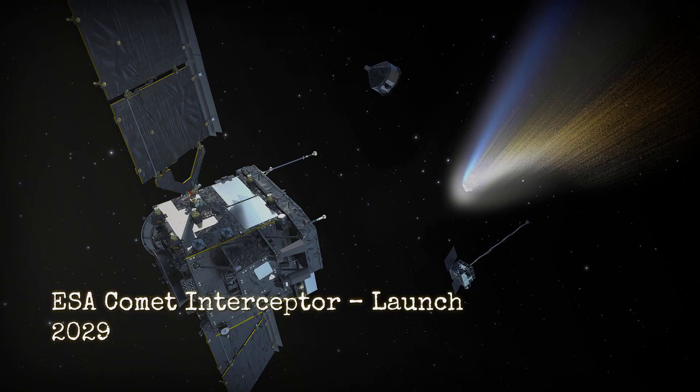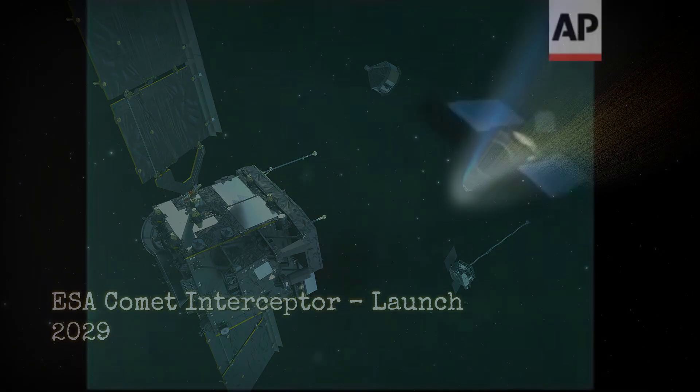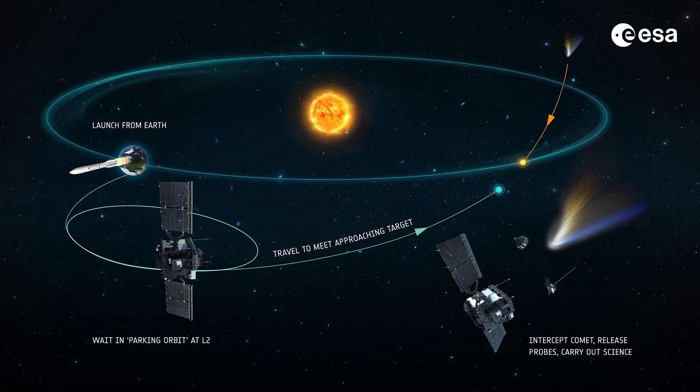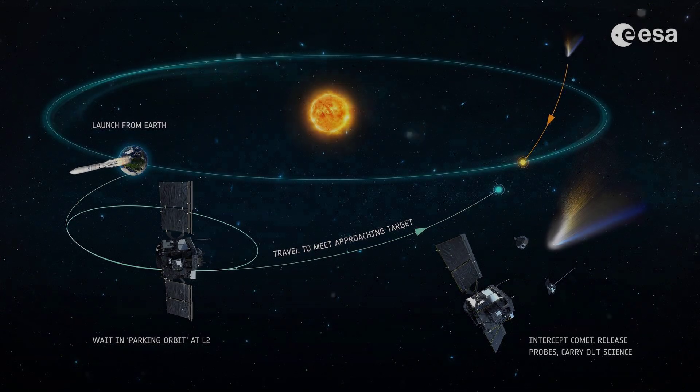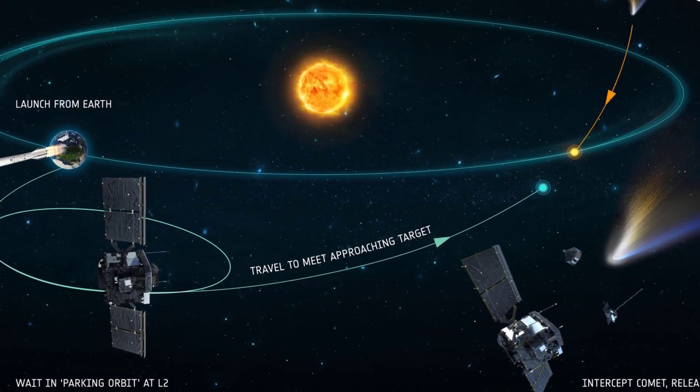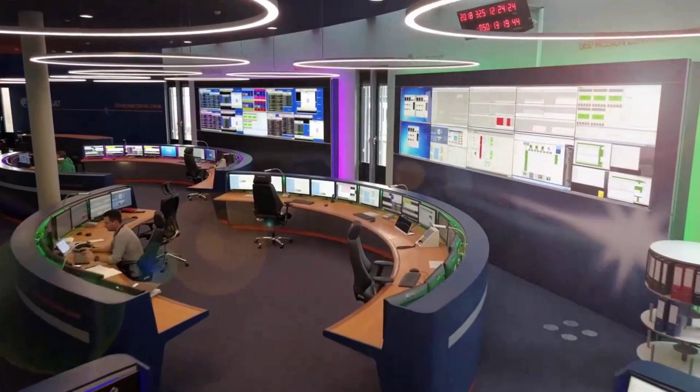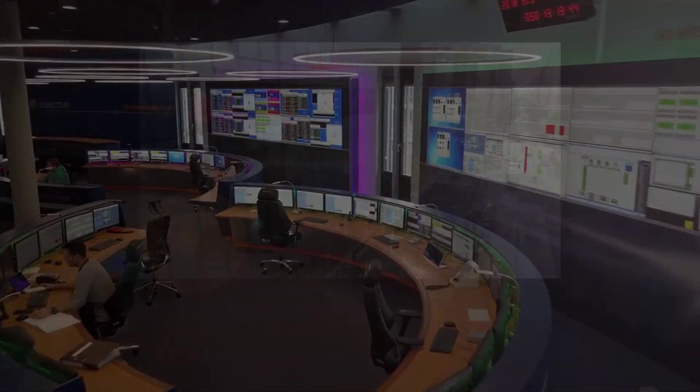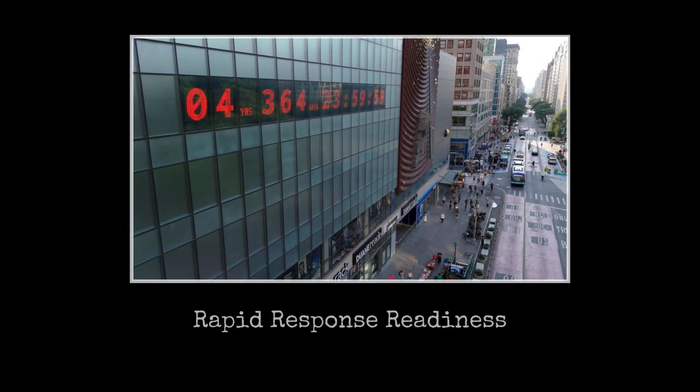ESA's Comet Interceptor mission, scheduled for launch in 2029, is designed to wait in space for the perfect opportunity: a pristine comet from the Oort cloud, or, if fortune favors, another interstellar visitor like 3I-Atlas. Unlike previous missions, Comet Interceptor will not chase a known target from launch. Instead, it will linger in a stable orbit, ready to spring into action when a suitable object is discovered. This rapid response strategy reflects lessons learned from the fleeting windows offered by objects like Oumuamua, Borisov, and now Atlas.